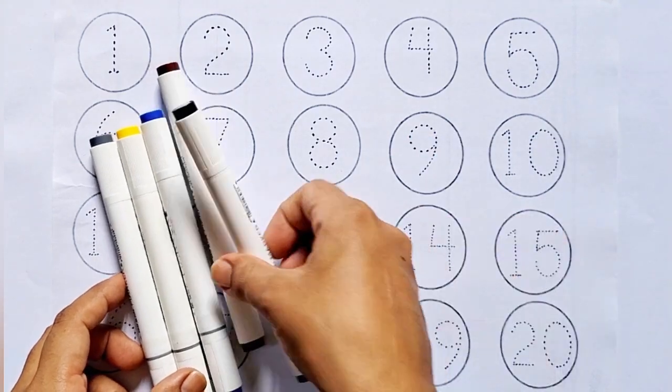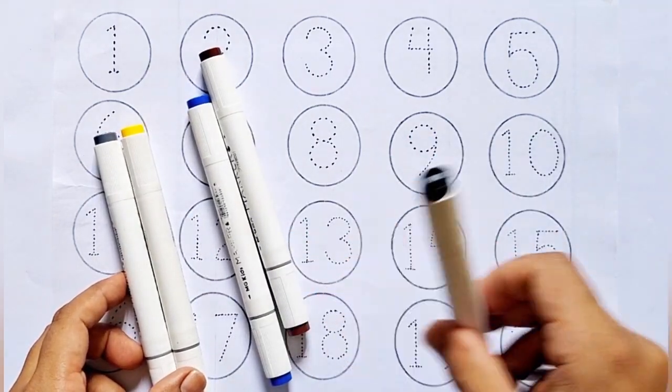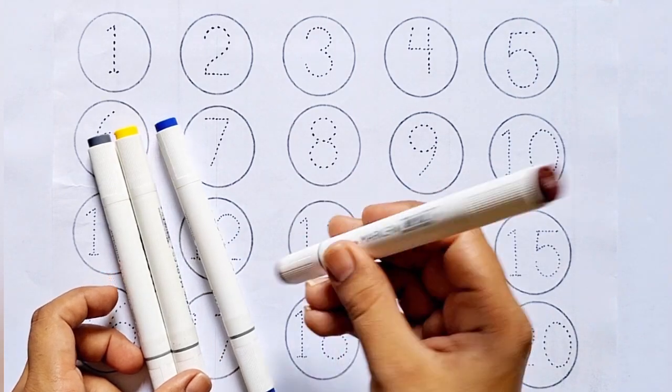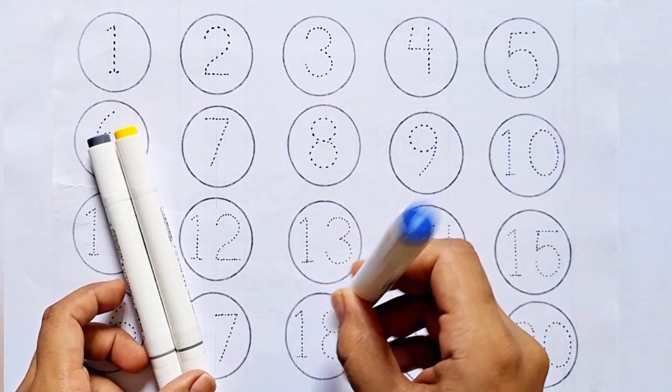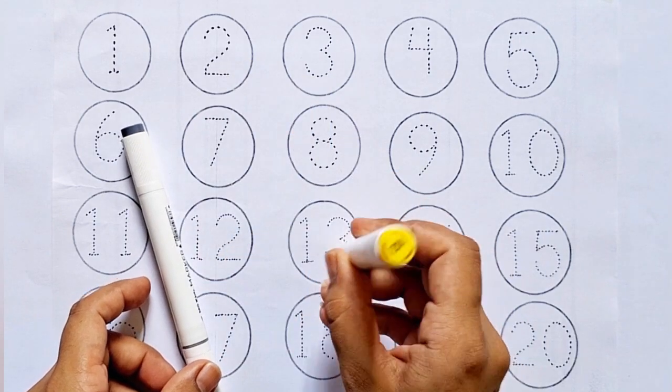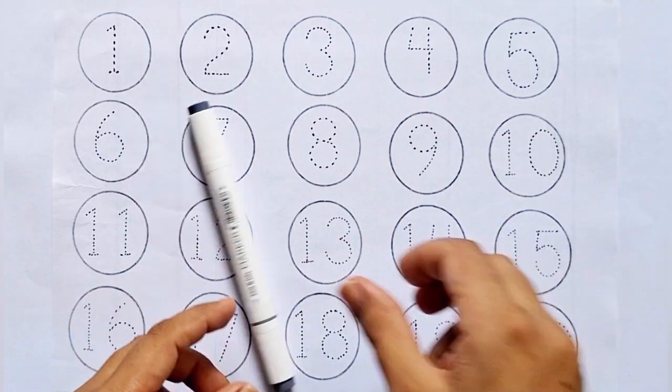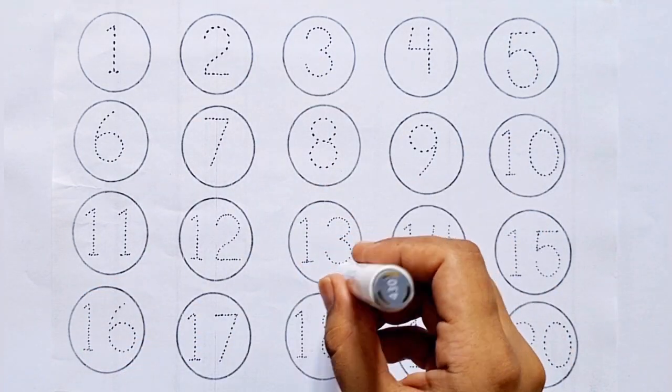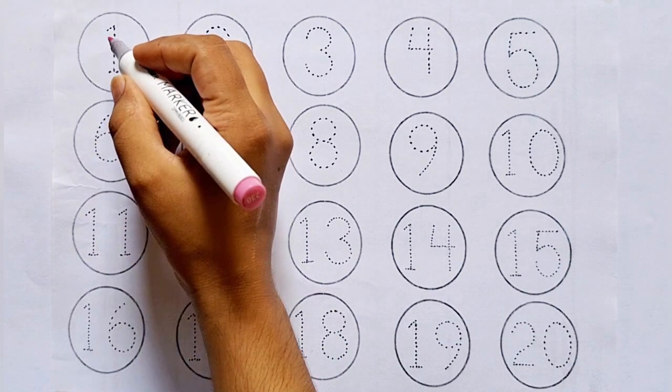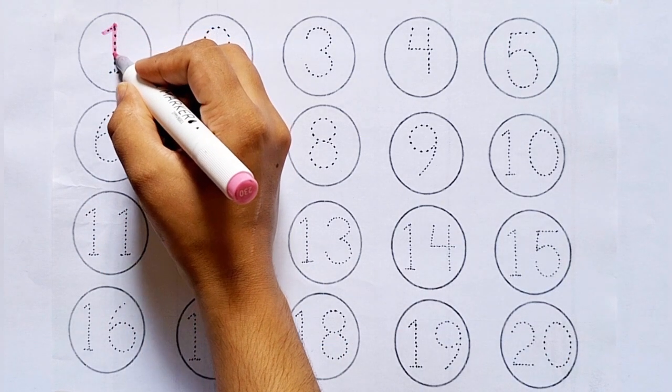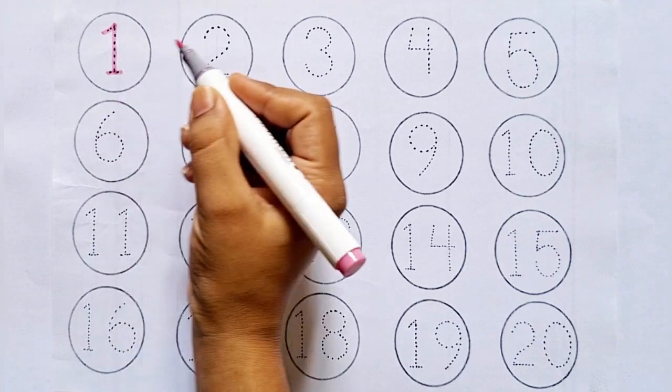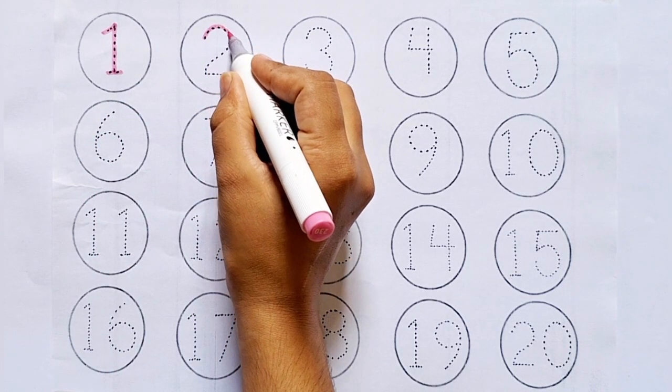1. This is 1. 2. This is 2. After 1 comes 2. 3. This is 3. After 2 comes 3.